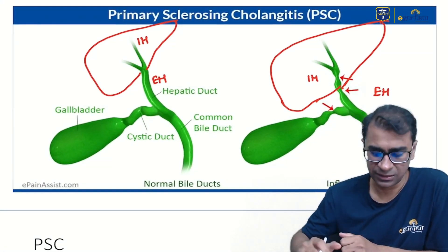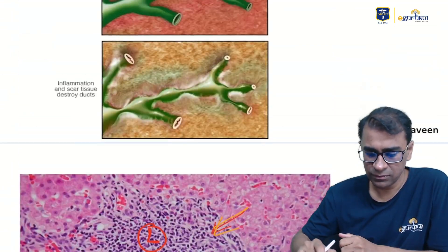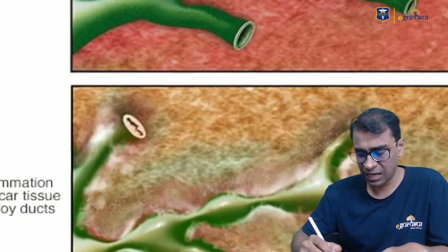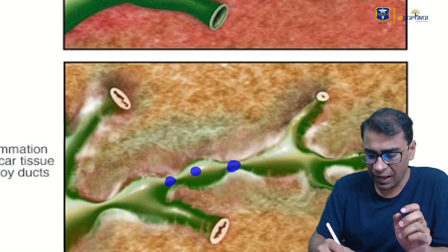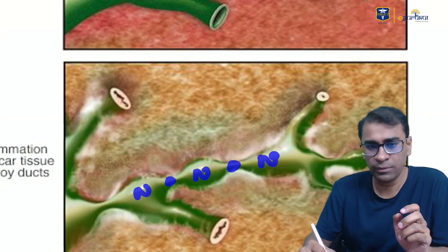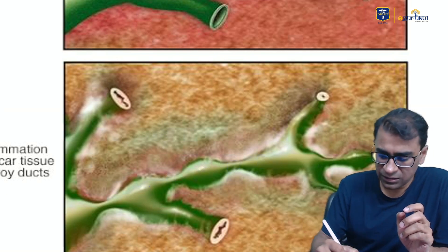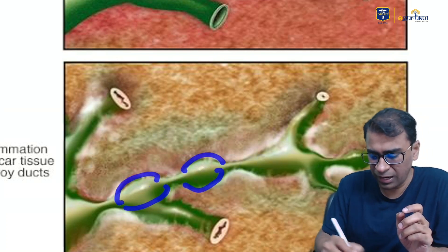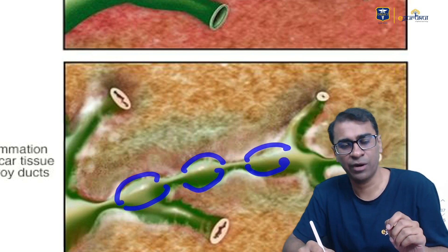The PSC finding in the liver shows sclerosed segments alongside dilated normal segments. This is also called a string of pearl appearance. It occurs in both intra- and extrahepatic bile ducts.